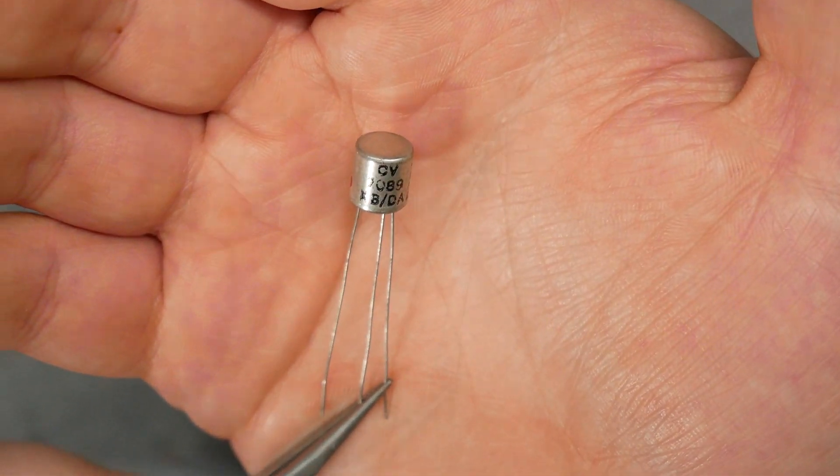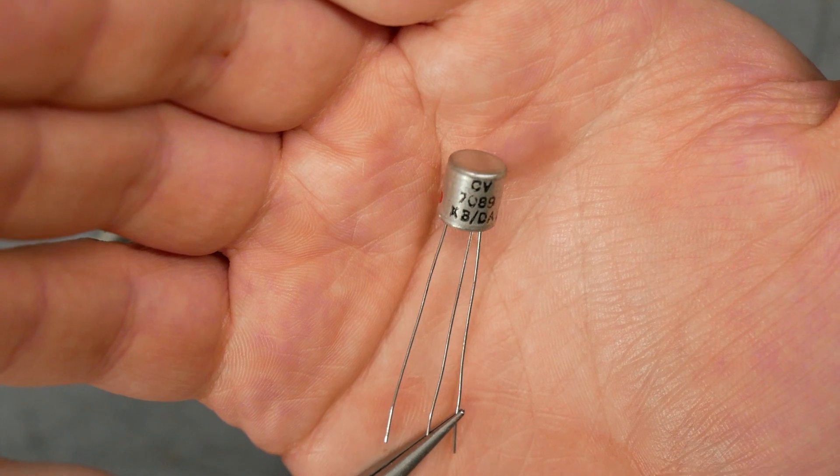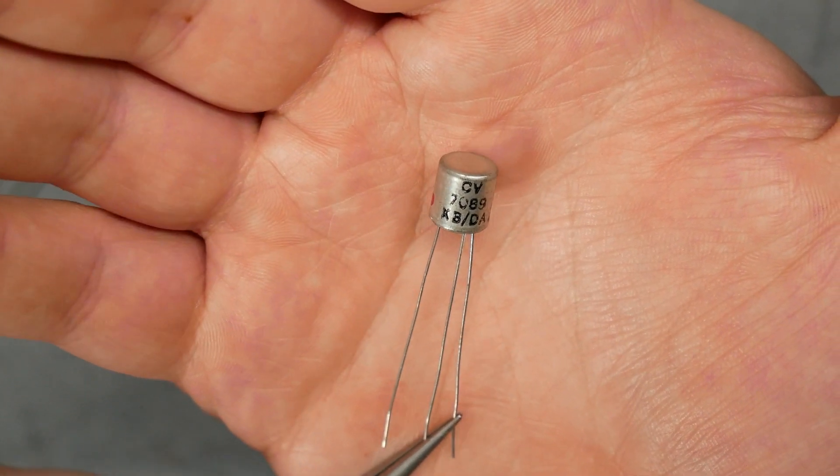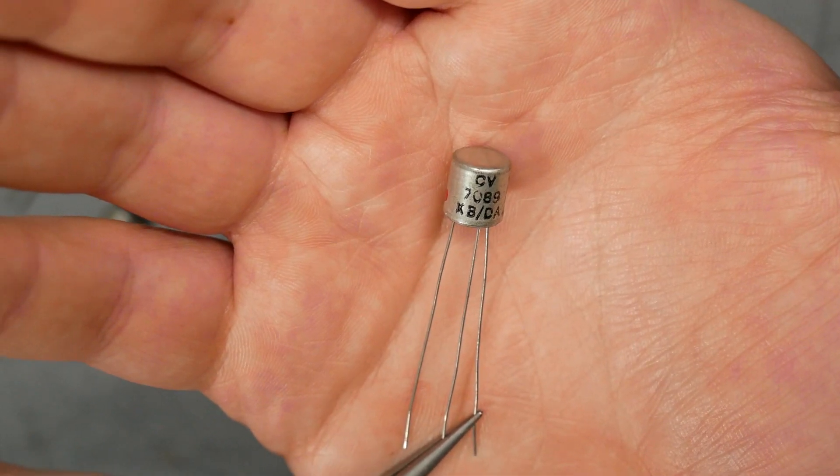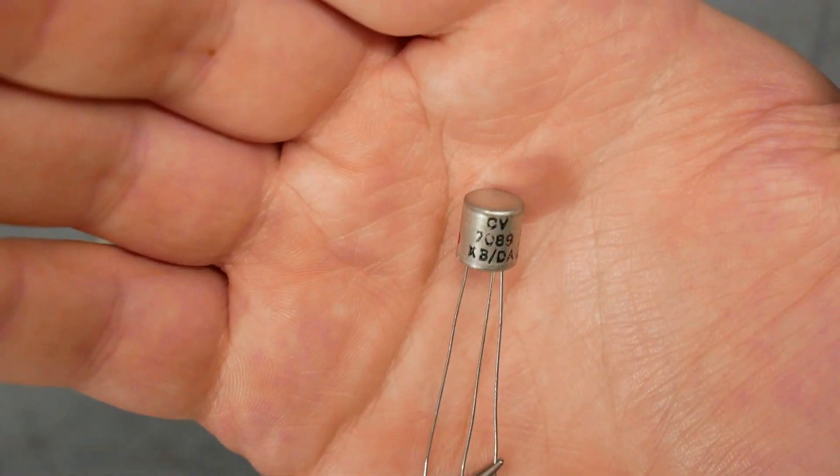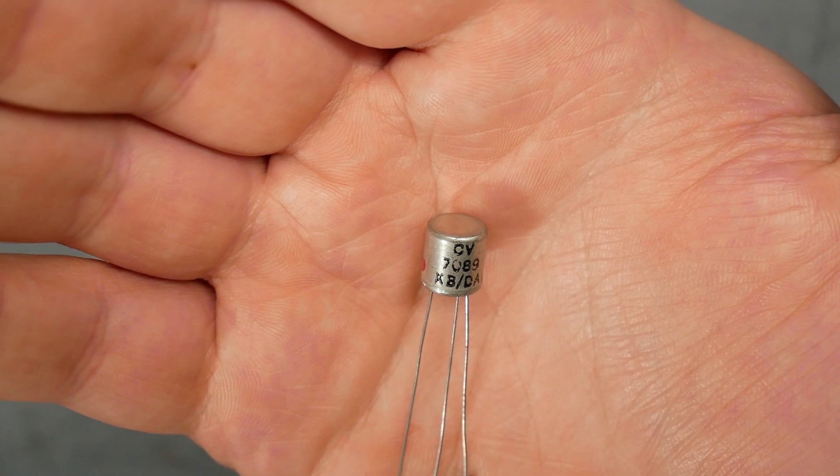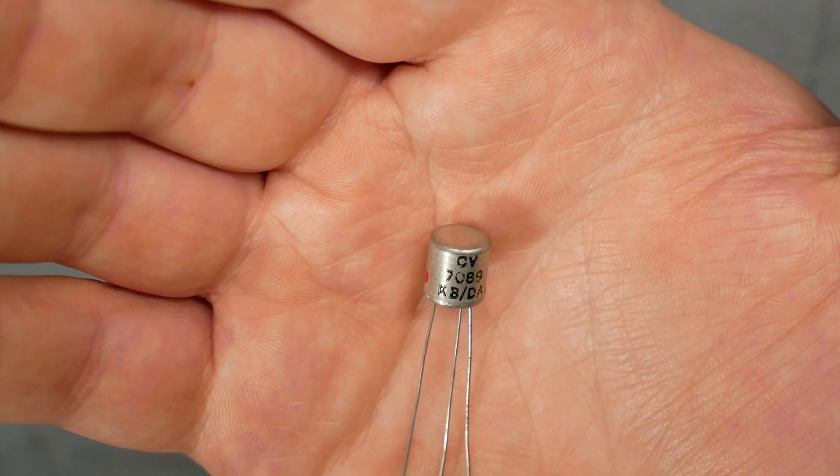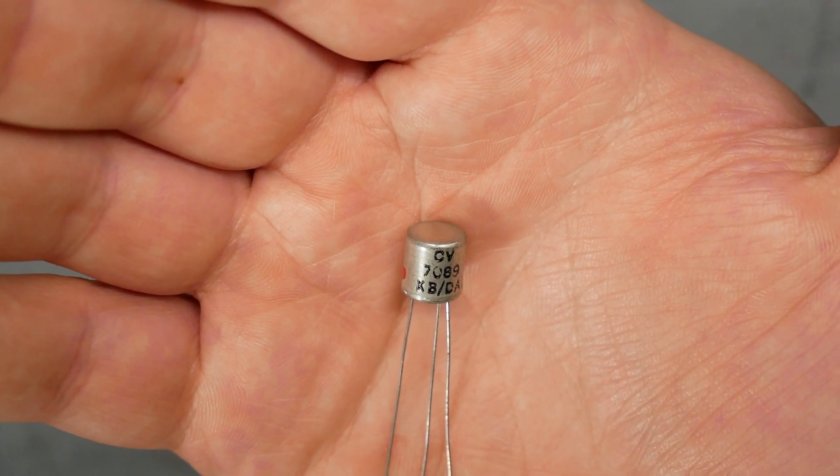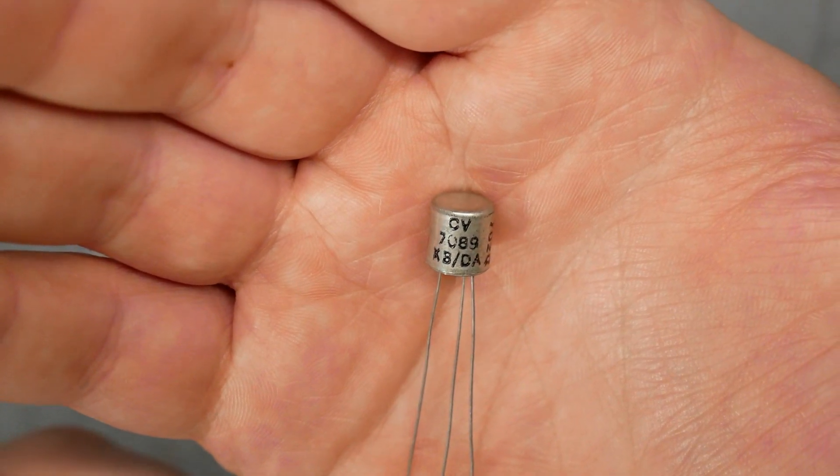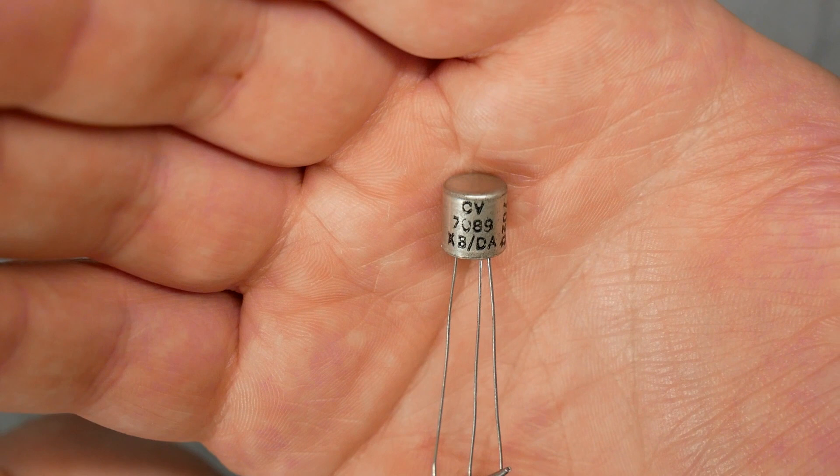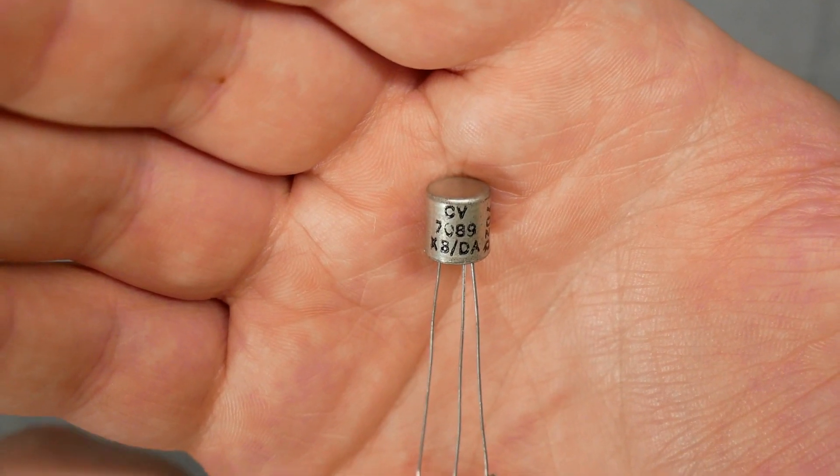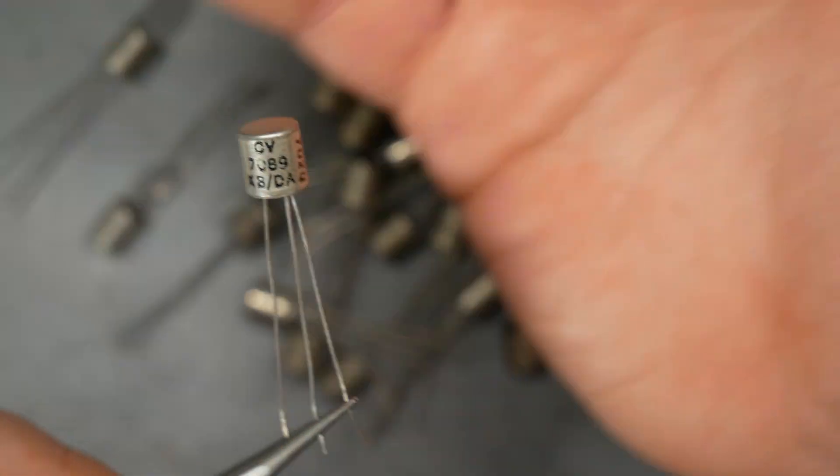Here I have a CV7089. CV is the military series from the UK, CV transistors or CV electronic components. Again this is the equivalent transistor to the AF11X series. Other markings here, KB. KB is military proofs. They're basically saying this transistor is fit for military service. And DA refers to the specific manufacturing plant. In this case DA is the Blackburn plant, the Mullard Blackburn plant. So in Blackburn, England.